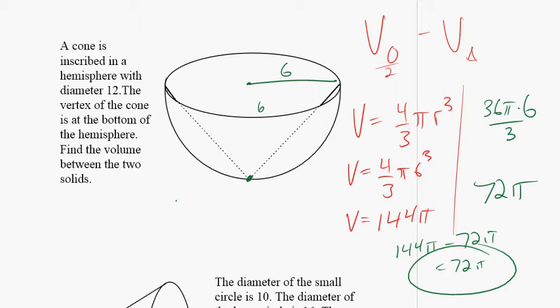Is that always going to be the case? If it shares the same diameter. If the cone starts at the diameter and goes to the bottom, which is the case here, is it always going to be half? Because that's kind of odd.